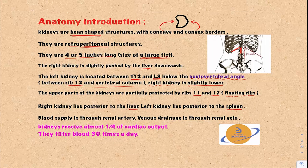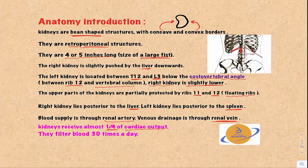The blood supply to the kidney is through the renal artery, which is a branch from the abdominal aorta. The venous drainage is through the renal vein into the inferior vena cava. The kidney receives almost one-fourth of the cardiac output, and they filter the blood almost 30 times a day.